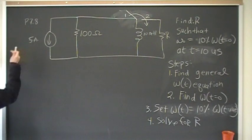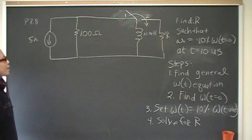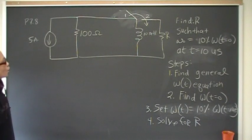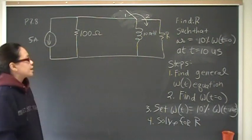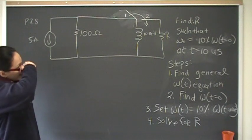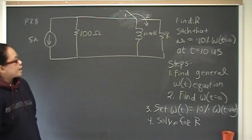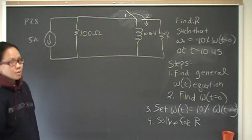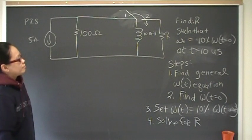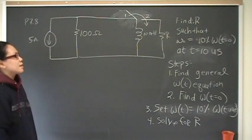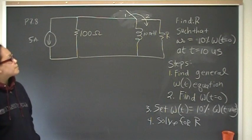And what we have here is we have a 5 amp independent source that's connected in parallel with a 100 ohm resistor and also a 10 millihenry inductor. And then at time 1, these are all connected. And then at time 0, or excuse me, before time 0, they're connected and they've been like this for enough time that they're in the DC steady state.